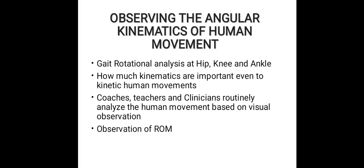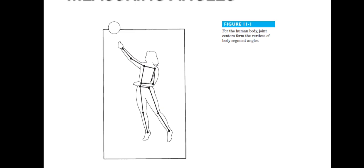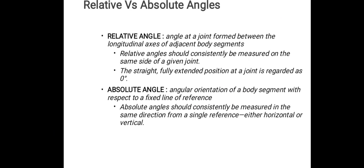Next is observing the angular kinematics of human movement. Rotational analysis at the hip, knee, and ankle shows how kinematics are important to human movement. Coaches, teachers, and clinicians routinely analyze human movement based on visual observation of range of motion. For human body joints, the center forms the vertex of the body segment angle. Relative angle is the angle at a joint formed between the longitudinal axes of adjacent body segments. It should constantly be measured on the same side of a given joint, and the fully extended position is regarded as zero degrees.